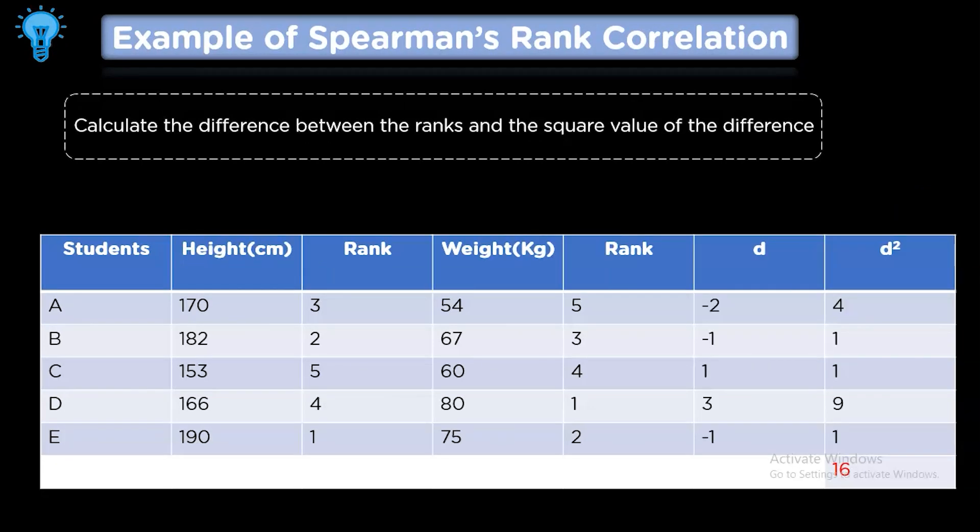Now we will calculate the difference between the ranks. As you can see, student A has a difference of minus 2, which is calculated by subtracting 5 from 3. Similarly, you can calculate the value of all the d and then square the d value to obtain the positive value of the differences. The 16 here is the sum of the value of the d square.